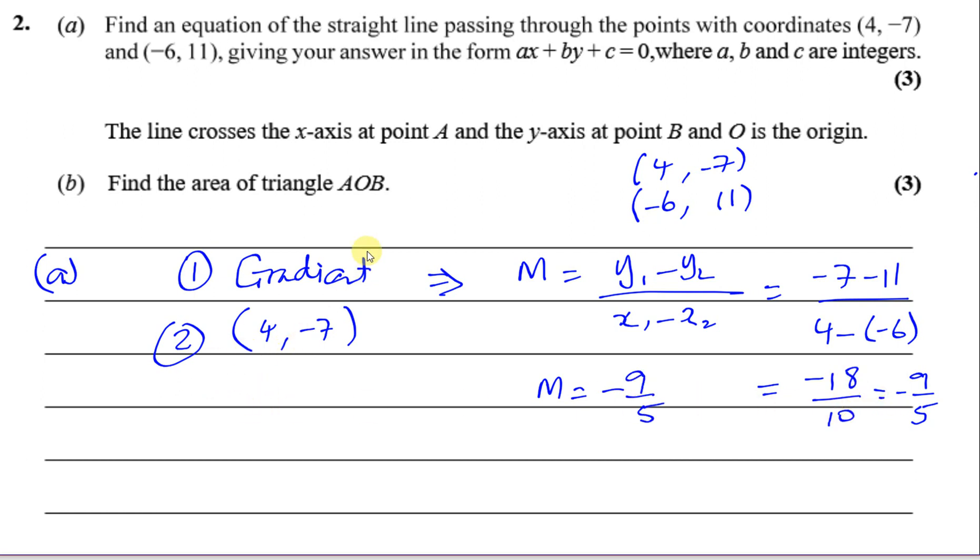We know M is -9/5, and we know it passes through the point (4, -7). It also passes through (-6, 11). We could use both of them; I just chose these because the numbers are smaller.